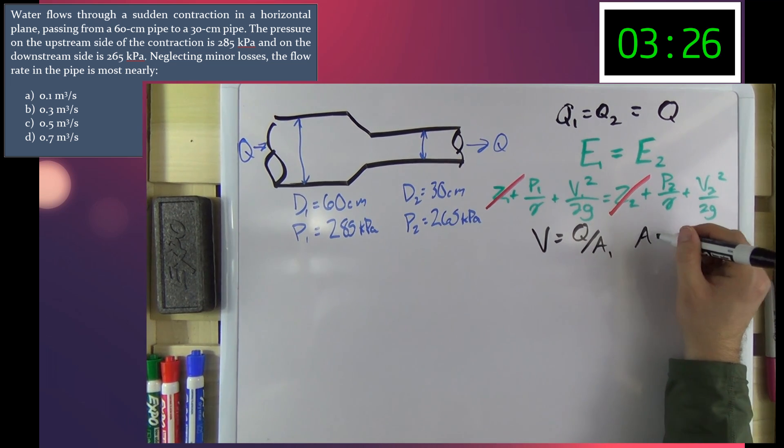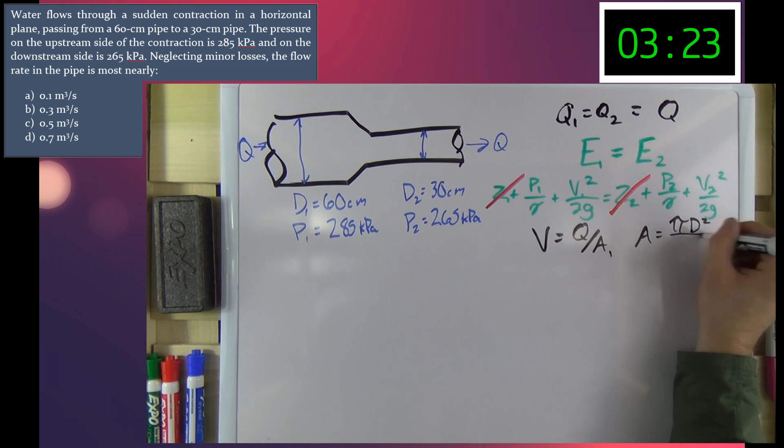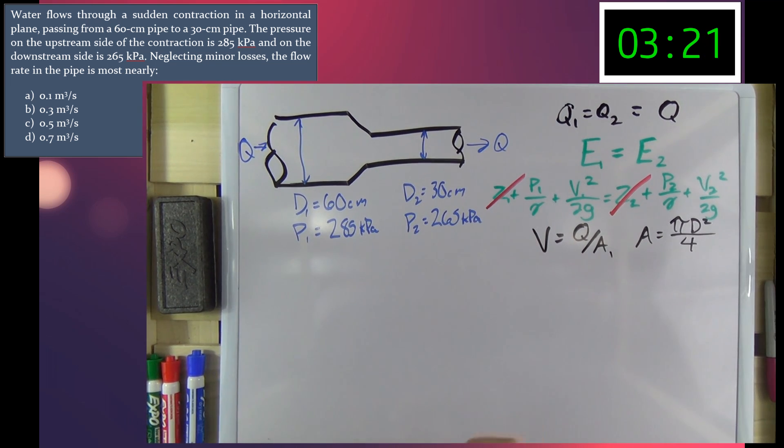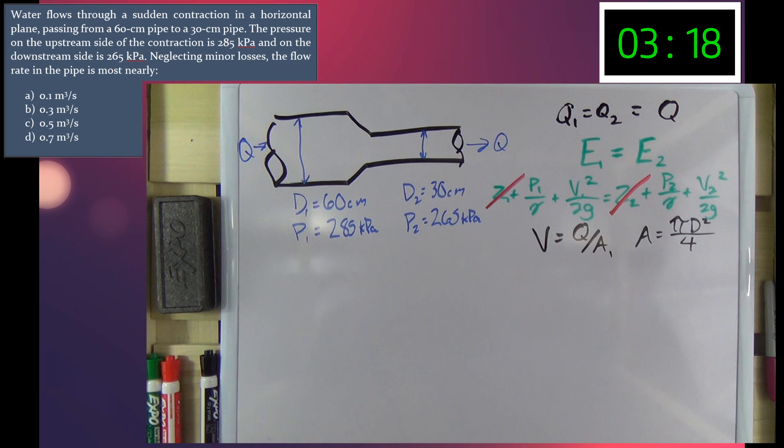And area of a pipe is equal to pi d squared over 4. So we'll go ahead and solve for the area upstream and downstream.